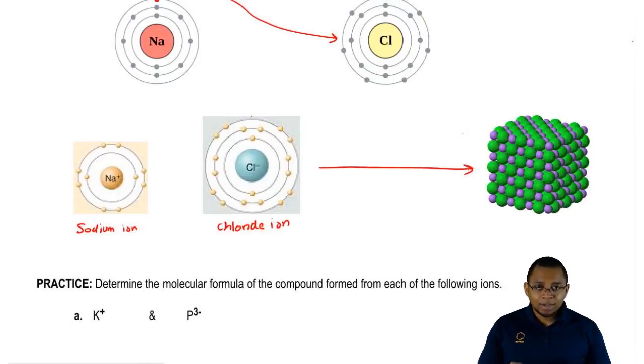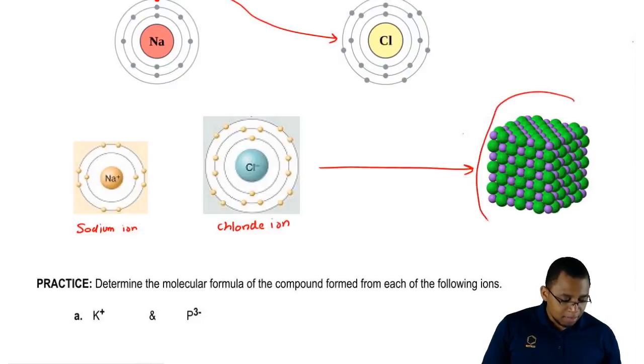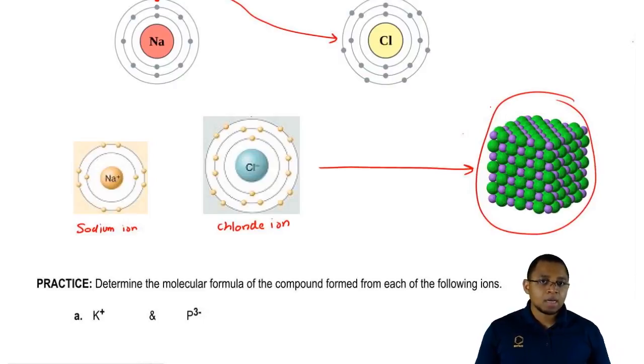Think of an ionic compound on a molecular microscopic level. On a molecular level, it's not just one sodium ion and one chlorine ion combining. It's a bunch of them combining together to give us our ionic solid. This is the kind of thinking we have to have when we're making our compound.